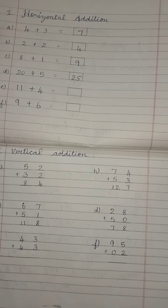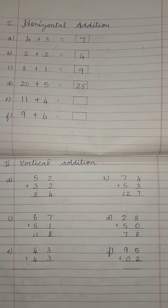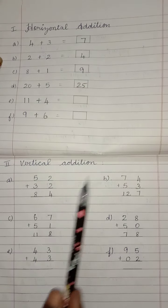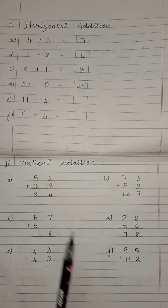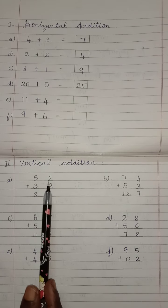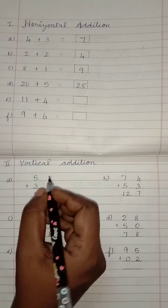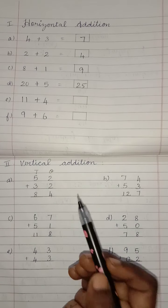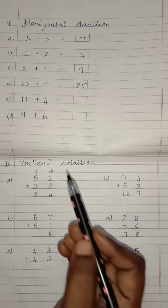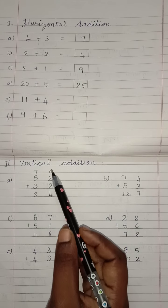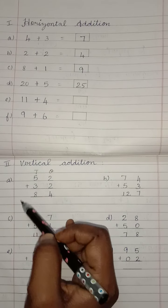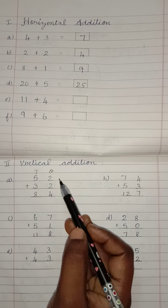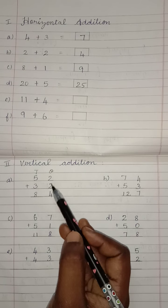Then, move on to Vertical Addition. Children, the previous format is called Horizontal Addition; this new format is called Vertical Addition. See here — this place is called Ones, and this place is called Tens. So where do we have to start the addition, children? From the Ones place, we have to start the addition; then only we move on to the Tens place.